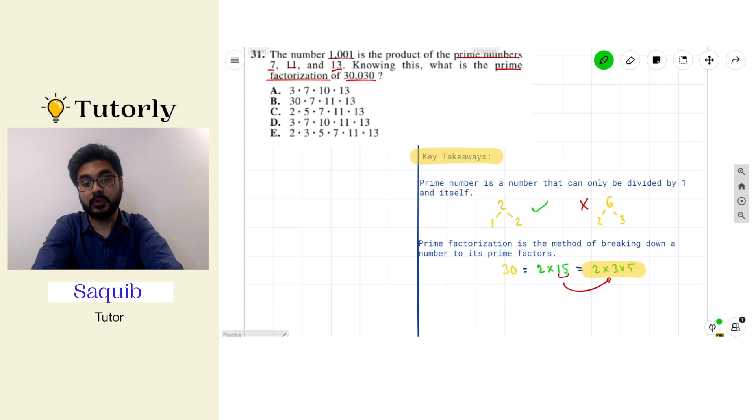I encourage you to also try it with other combinations like 5 times 6 or 3 times 10, and you will still end up in the same place. So let's see how we can apply these concepts to find out the prime factorization of 30,030. And how does it relate to 1001?